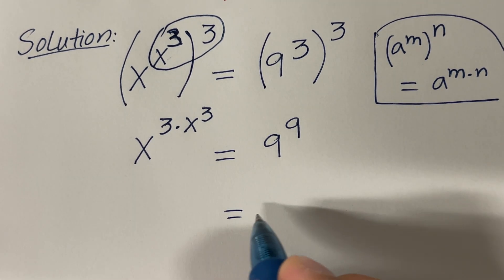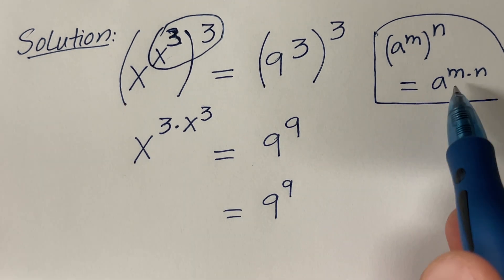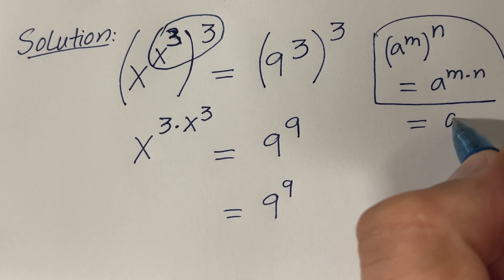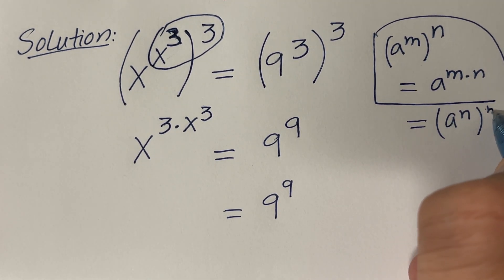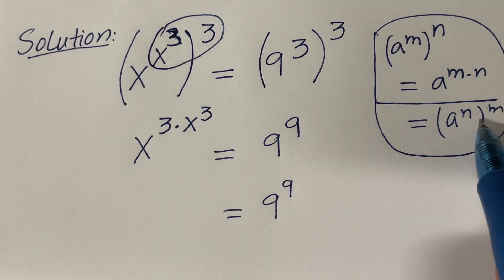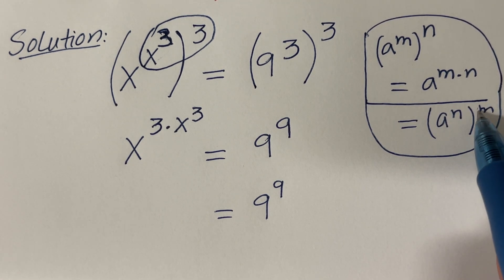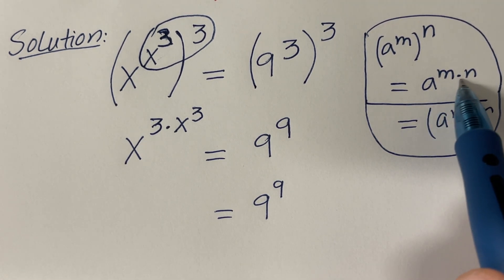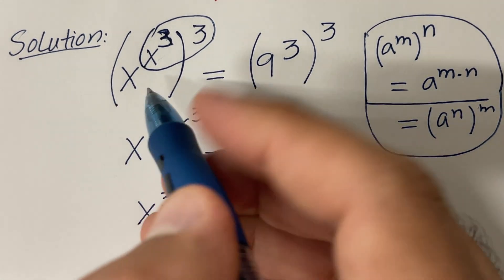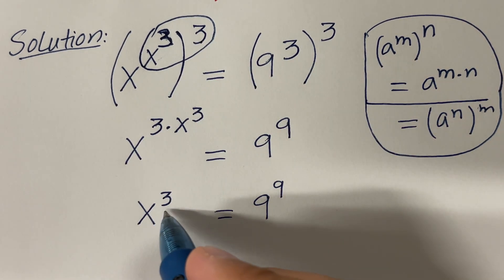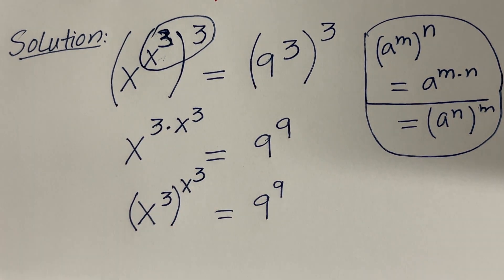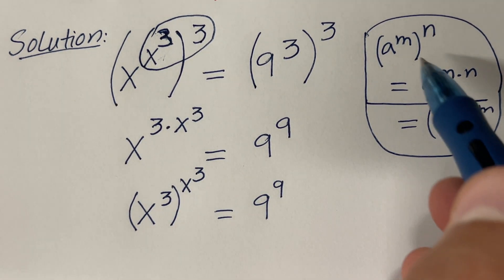Now the right hand side is 9 raised to the power 9, and I can use this property again to write this as a raised to the power n raised to the power m. If m is inside the parentheses, this property says you can switch the roles of m and n, because both give the same answer. By using this property I can write x raised to the power 3, bringing this 3 inside the parentheses and this exponent x raised to the power 3 outside the parentheses.